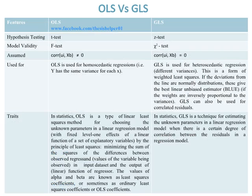Hypothesis testing in OLS is interpreted by the T-test, while hypothesis testing in GLS is interpreted by the Z-test. Model validity in OLS is analyzed by the F-test, while model validity in GLS is analyzed by the chi-square test. It is assumed in OLS that the correlation of Ui and XB does not equal 0, while in GLS it is assumed that the correlation of Ui and XB is equal to 0.